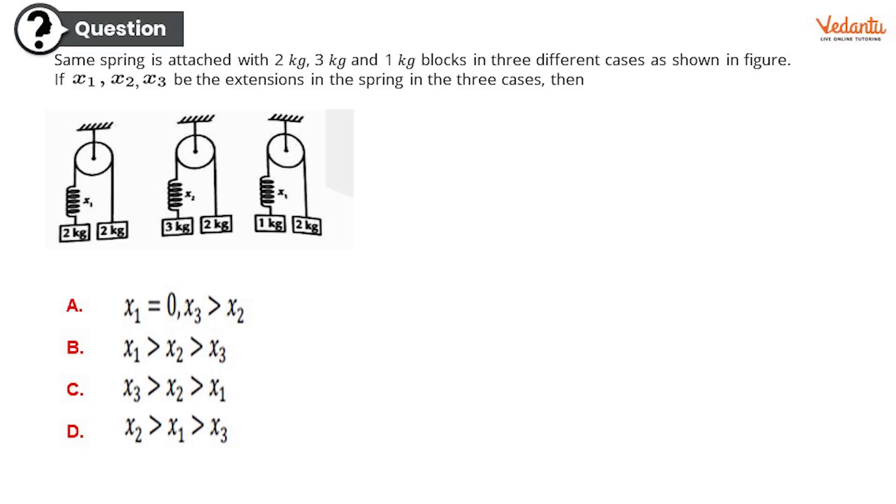Moving on to one another very interesting, difficult looking question. The question is: same spring is attached with 2 kg, 3 kg, and 1 kg blocks in three different cases as shown in the figure. If x₁, x₂, x₃ be the extensions in the spring in the three cases, then: Option A: x₁ = 0 where x₃ > x₂. Or option B: x₁ > x₂ > x₃. Option C: x₃ > x₂ > x₁. Or finally option D: x₂ > x₁ > x₃. So what do you guys think? A lot of x's in this question, I hope that's not the case.